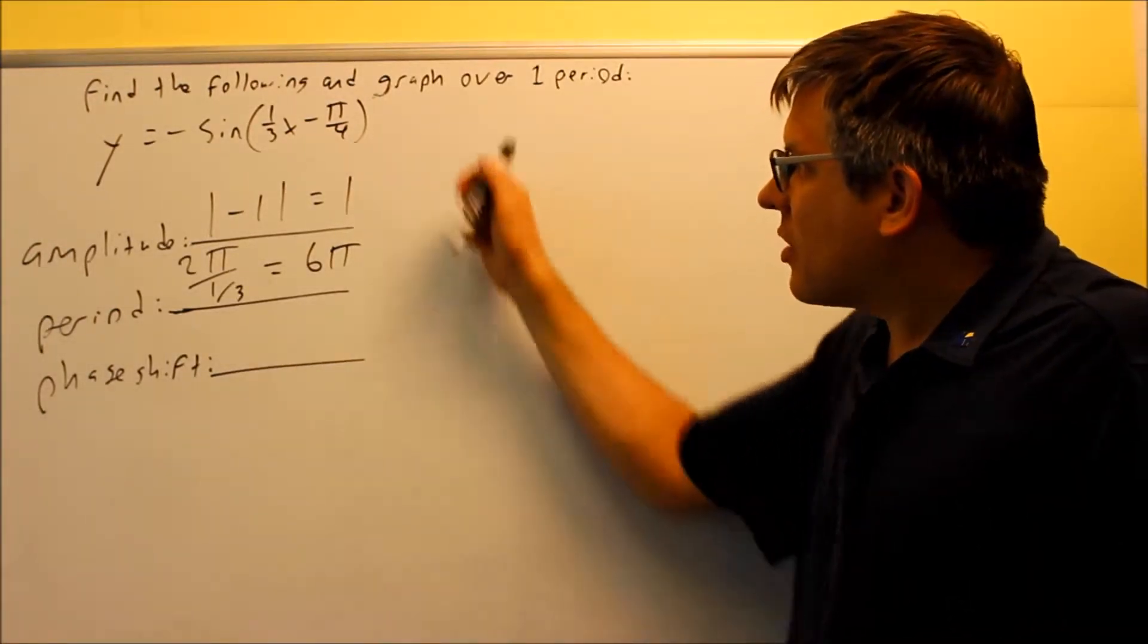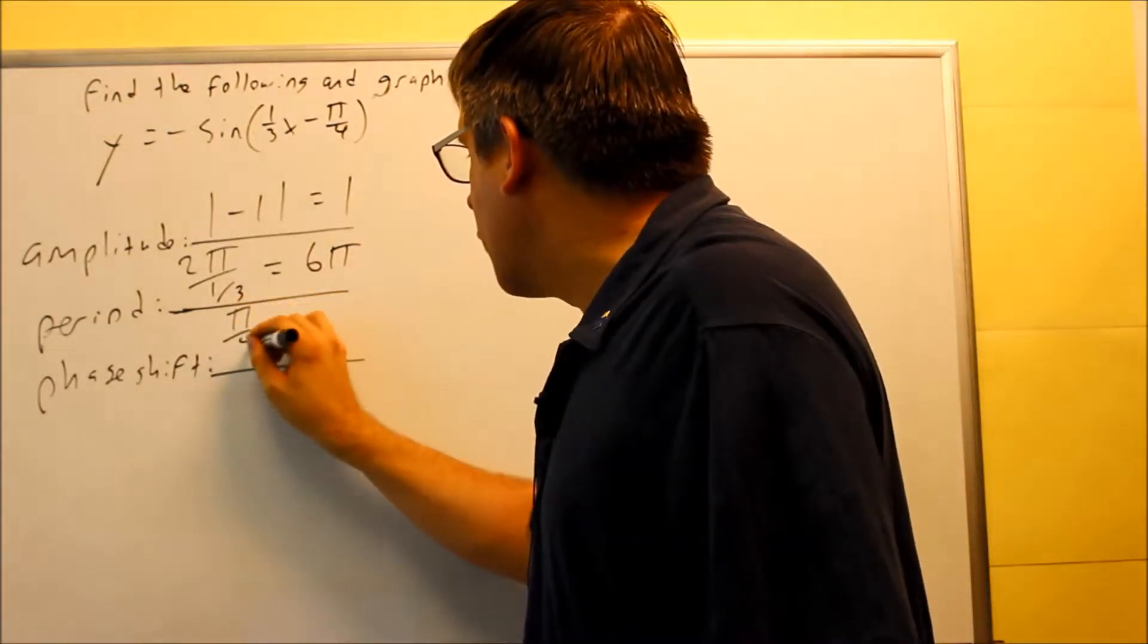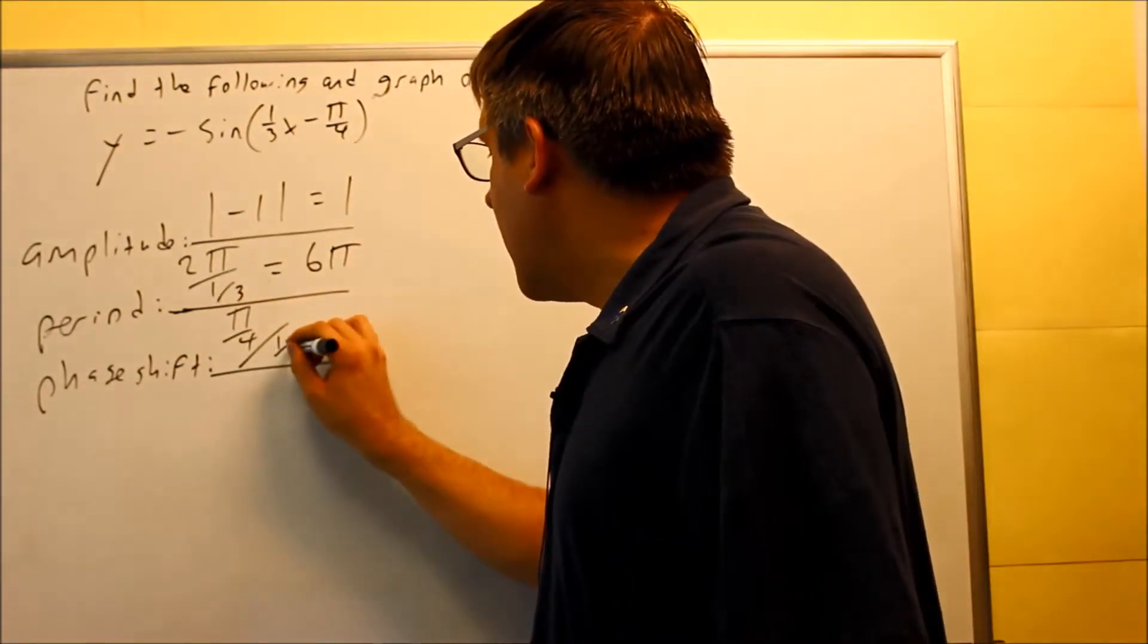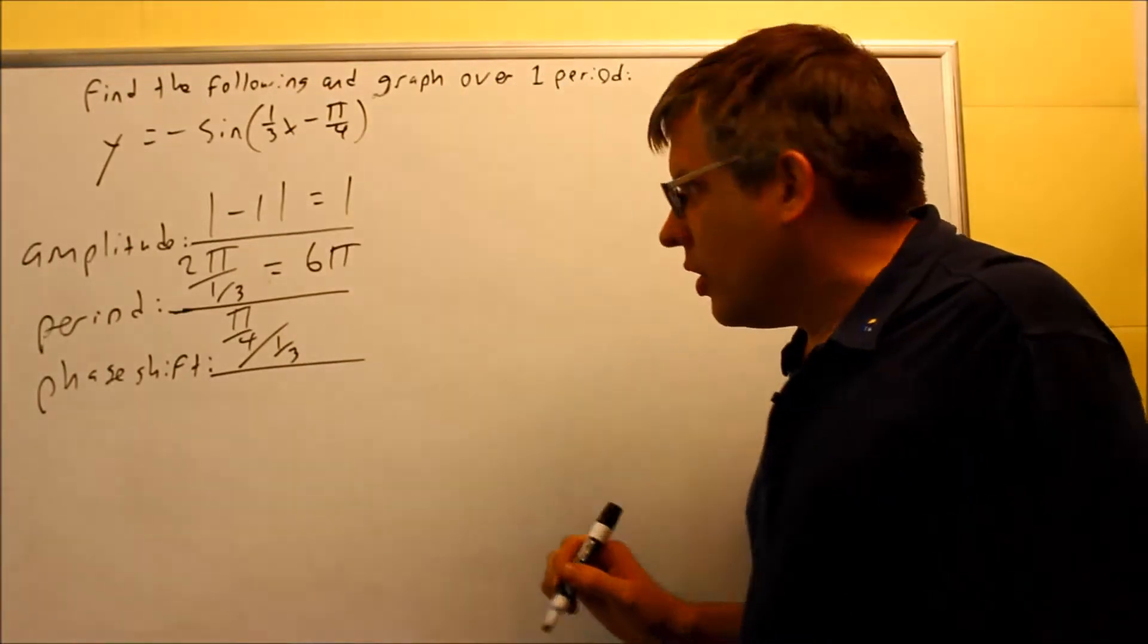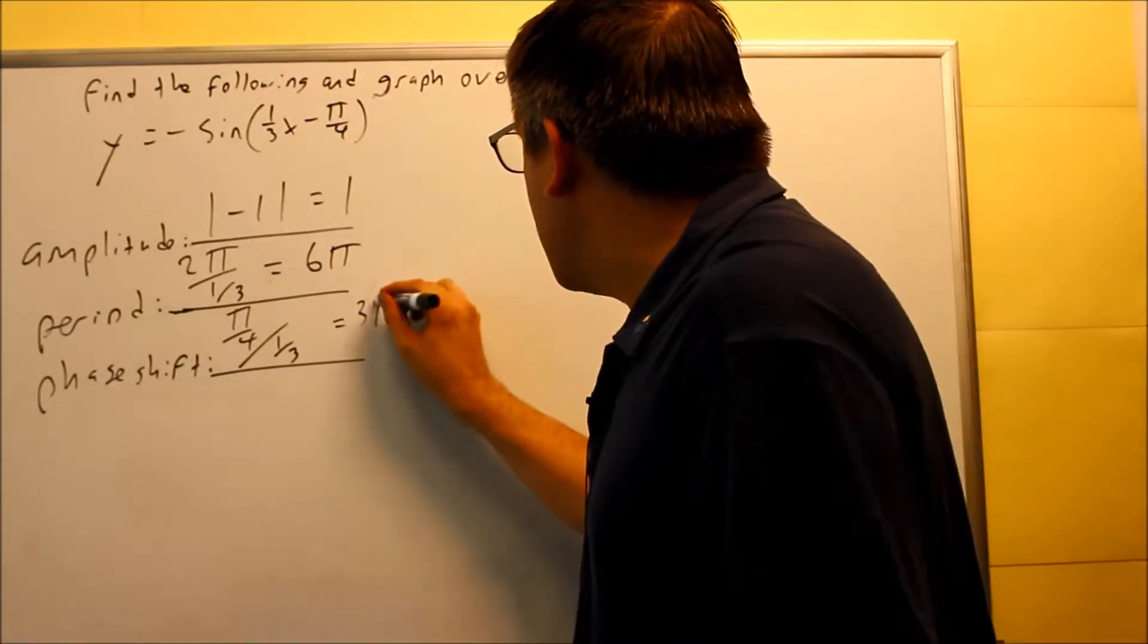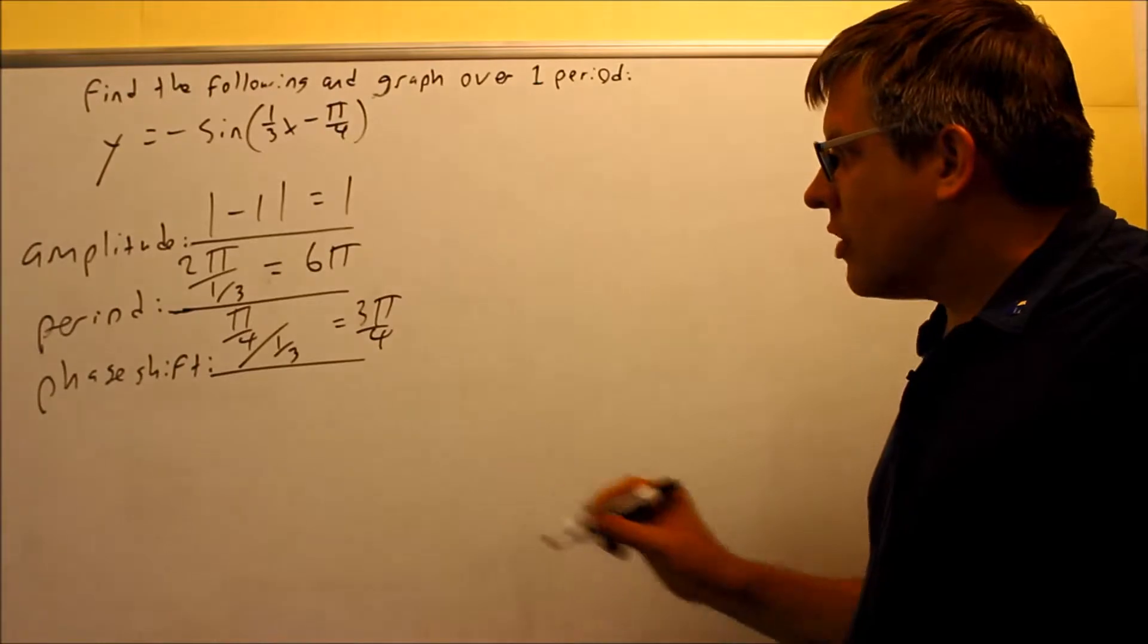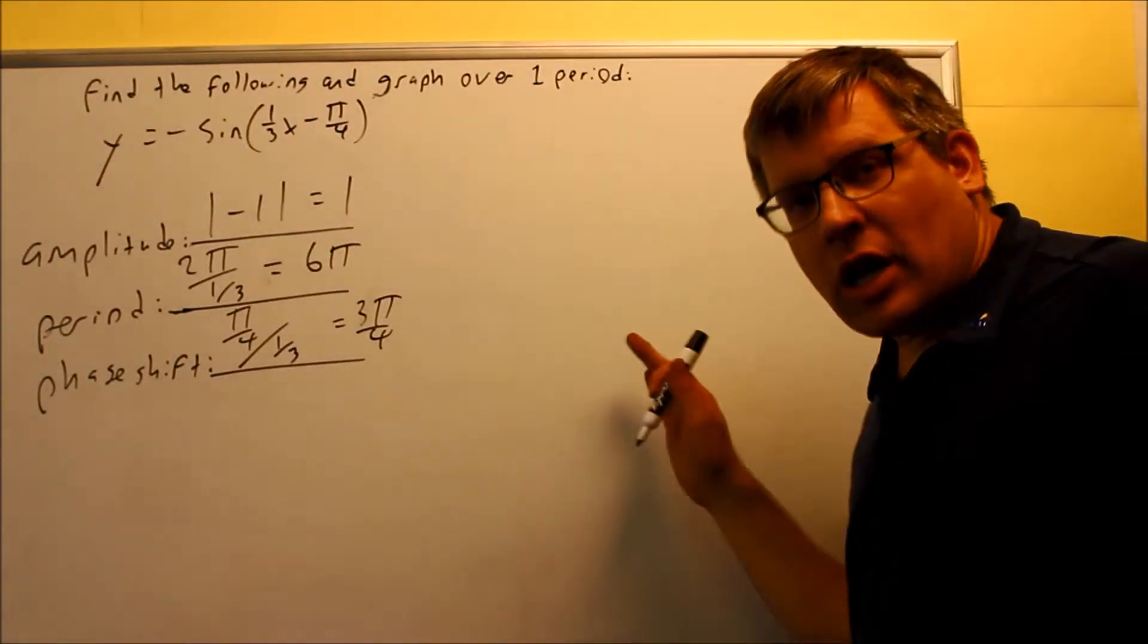Your phase shift is going to be the opposite sign of this c value. So we're going to do positive π/4, dividing that by 1/3. When you flip this, you're going to get 3π/4. So 3π/4, that's going to be your phase shift. It's positive, which means that the graph will actually move to the right.